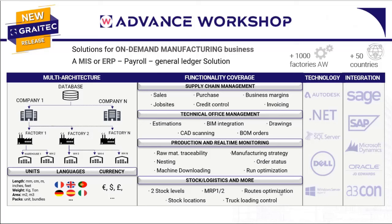When looking at supply chain management, we can manage the sales process — creating quotes, credit control, invoicing, job sites, managing extras attributed to projects, change orders, etc.